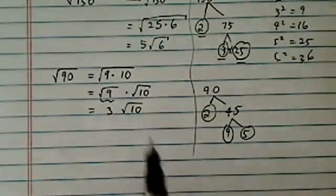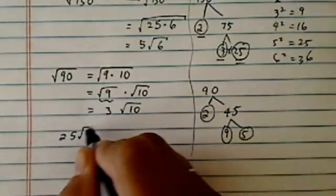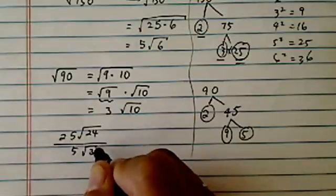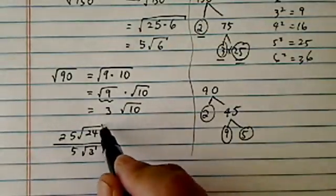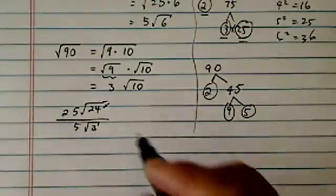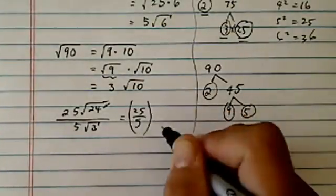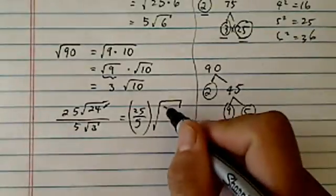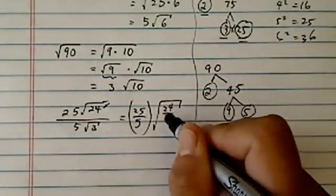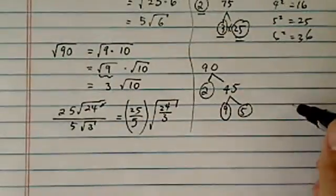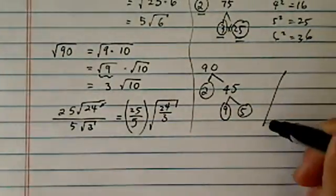So far, so good. Next one: 25√24 divided by 5√3. Now, instead of rushing in to simplify √24, I'm going to show you a trick. I'm going to do 25 divided by 5. I'm going to put everything under the radical: 24 over 3.